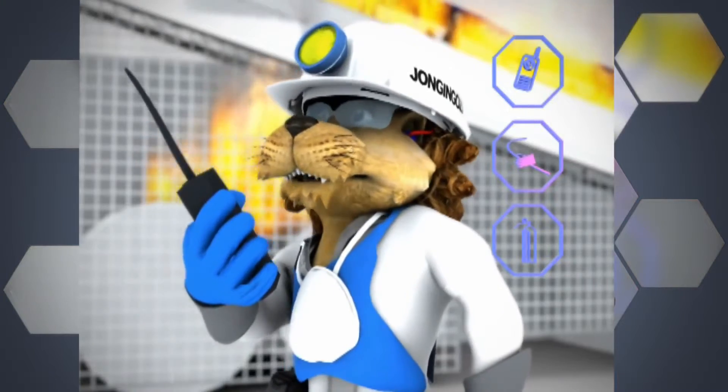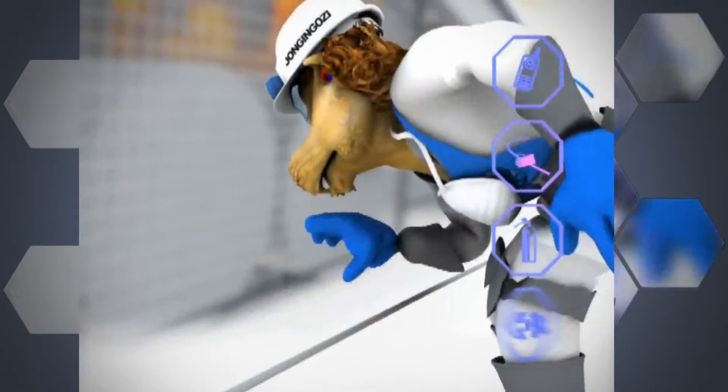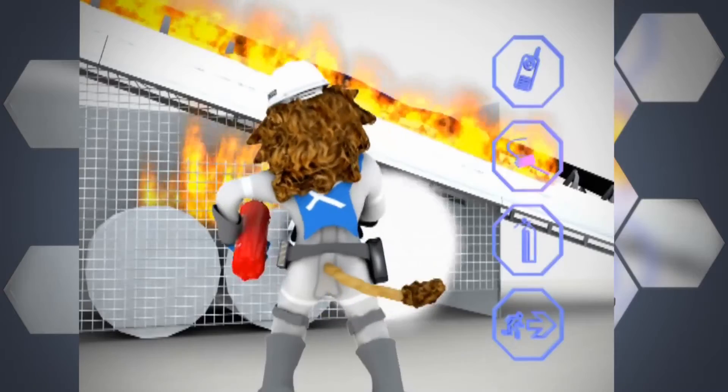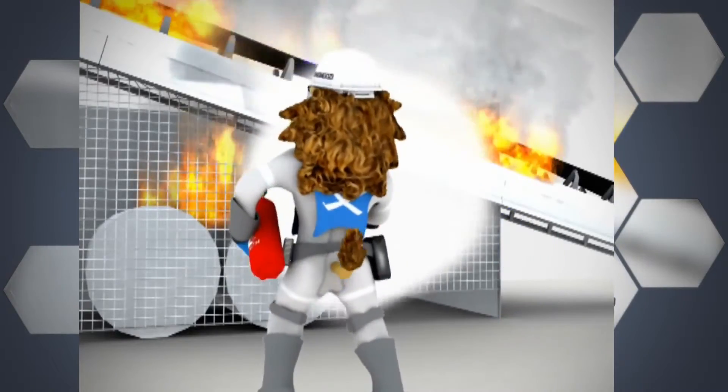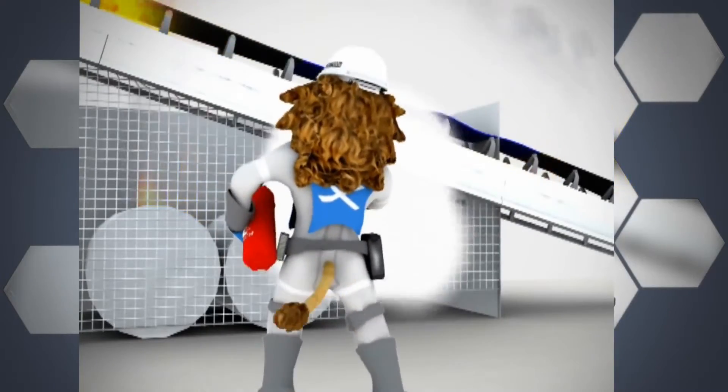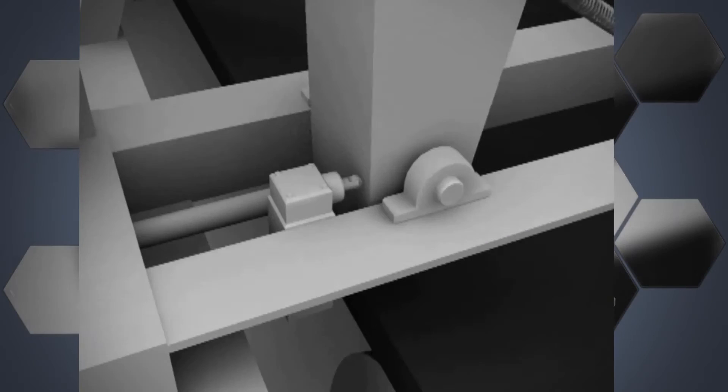One is in the event of a fire on a conveyor belt, first things first is you communicate it, a cell phone, a radio. Second, you pull a bell wire to stop the conveyor belt. Third, you try and extinguish. Fourth, you evacuate the area if it's uncontainable.